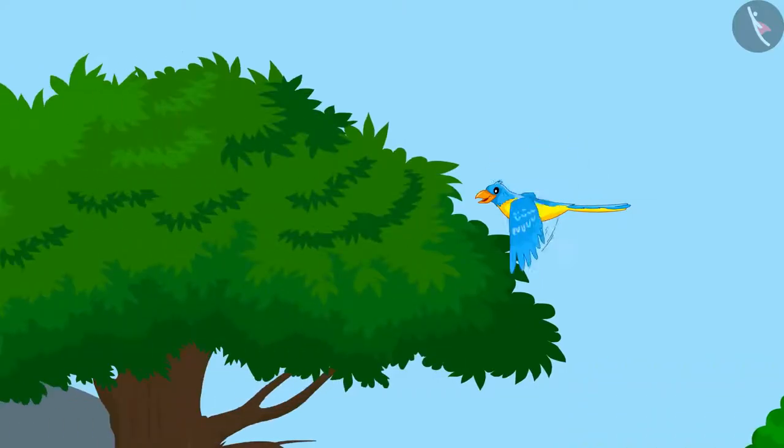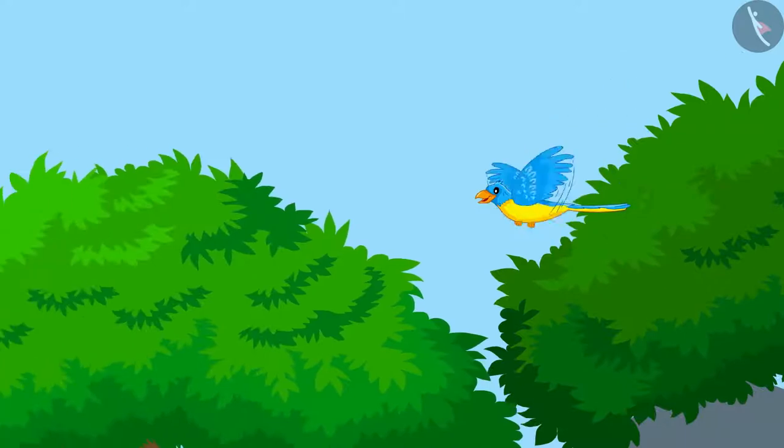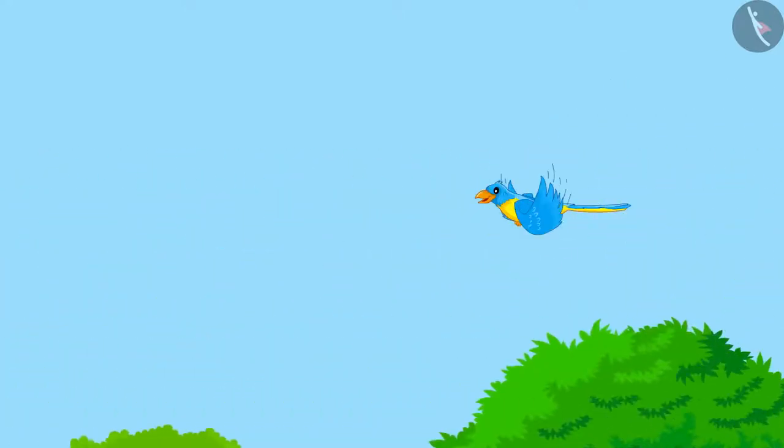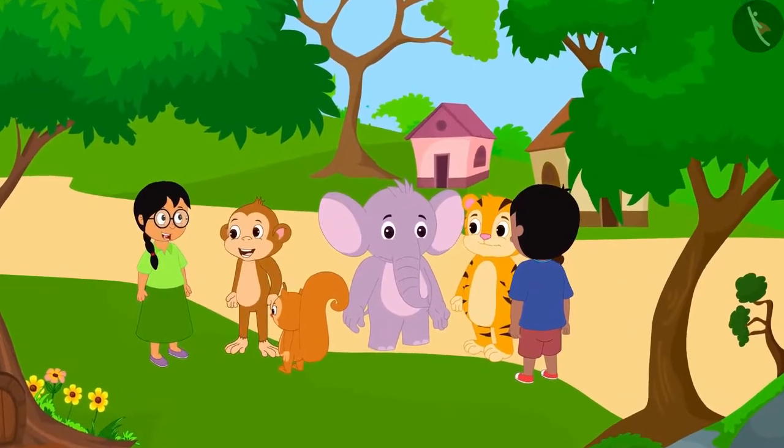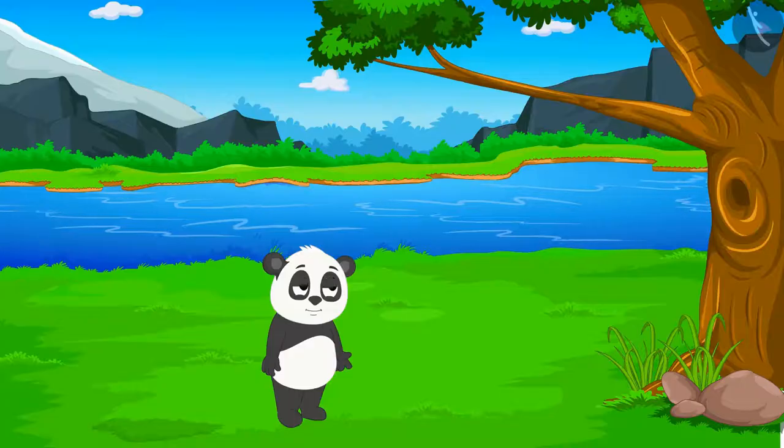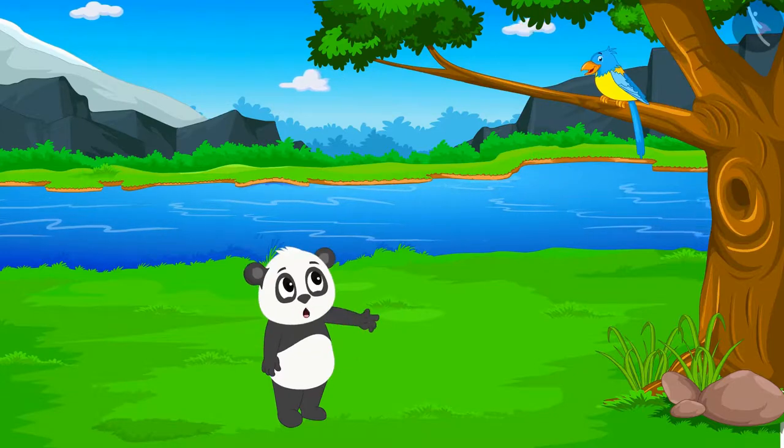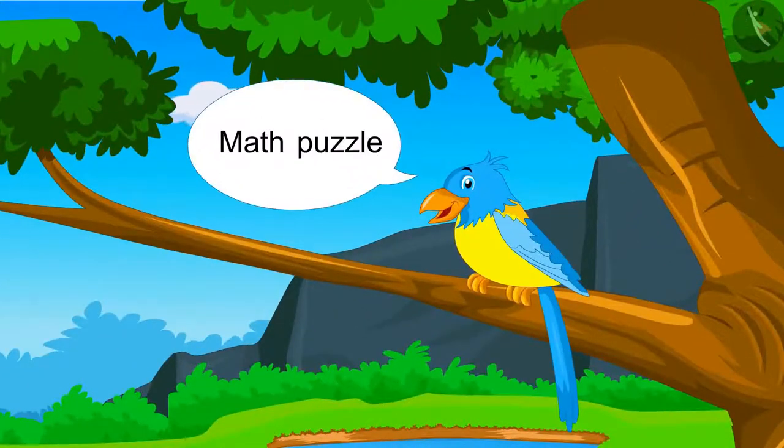A unique bird is seen roaming around in Champapur. According to the villagers, this bird can fulfill any of your wishes. But anyone who sees this bird has to solve a math puzzle to get his wish fulfilled.